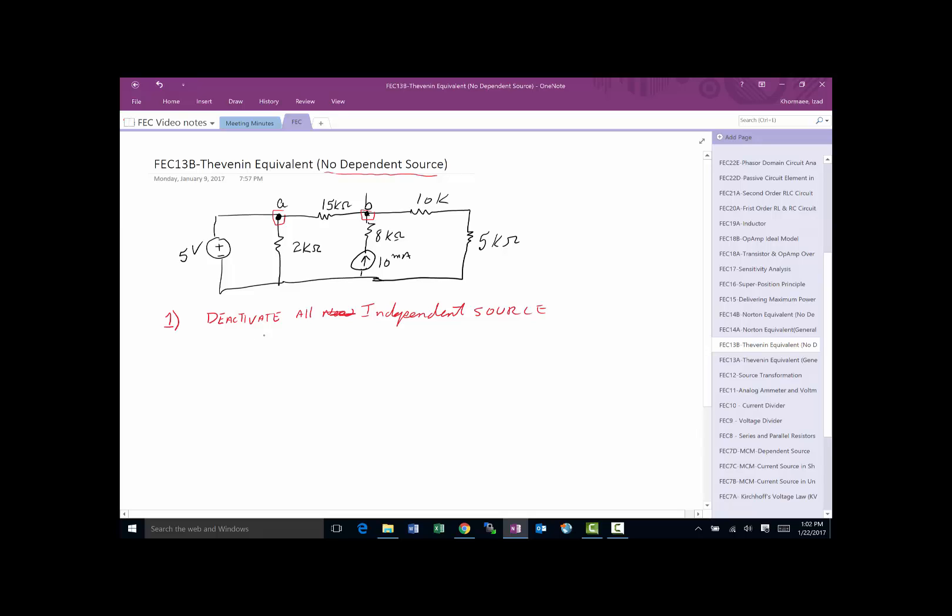What does it mean to deactivate a voltage source? Well, the job of a voltage source is to do what? Is to give you voltage, which means if I want to deactivate a voltage source, then I have to make sure that V goes to zero, which basically means you replace it with a short. If I replace it with a short, the voltage across is guaranteed to be zero.